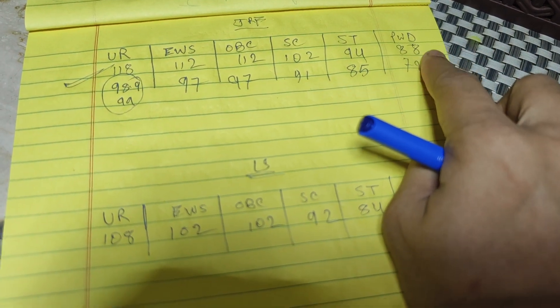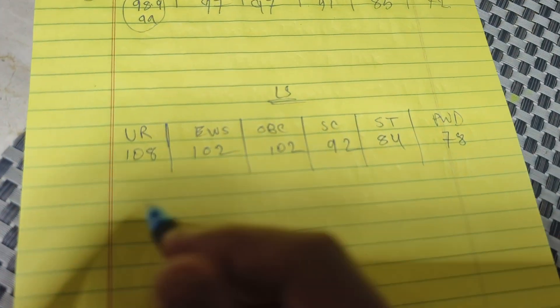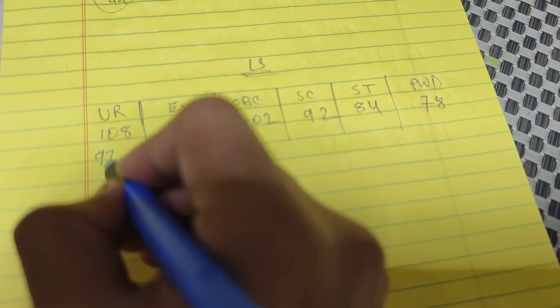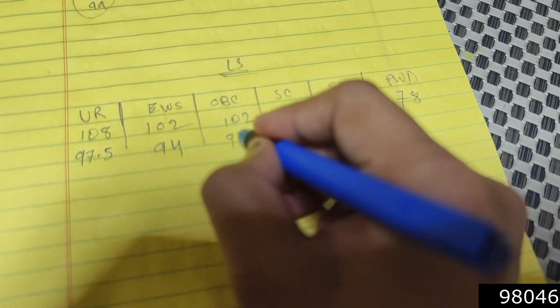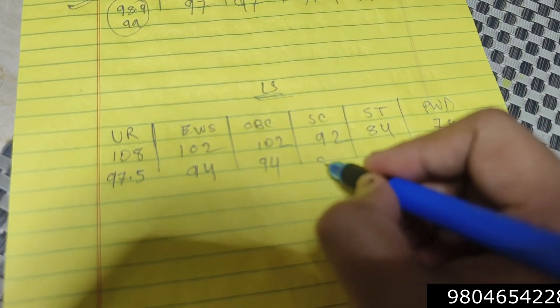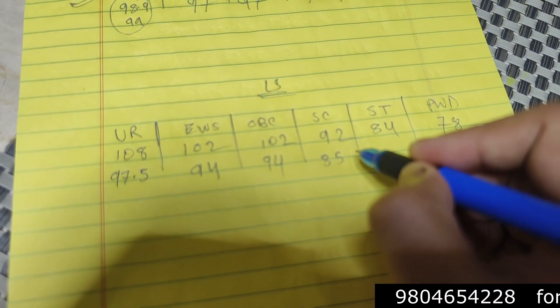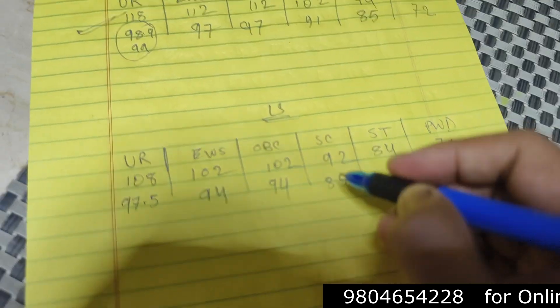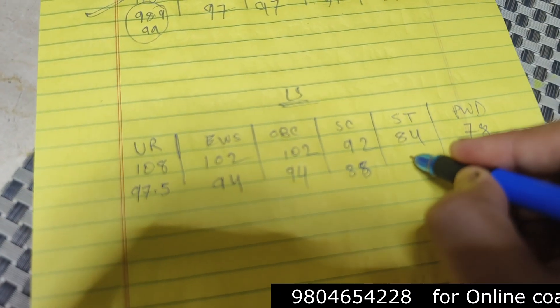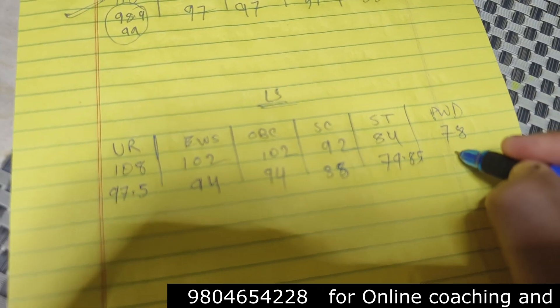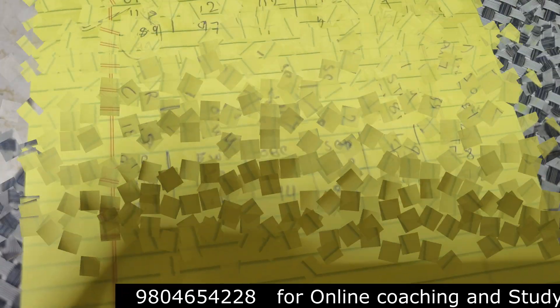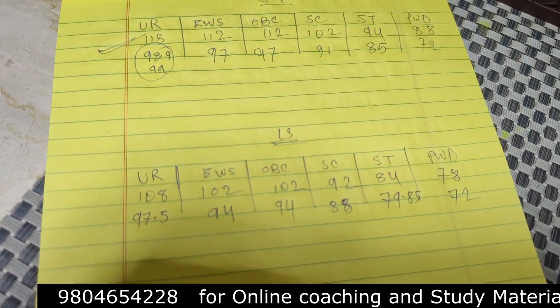Next come to the LS category and for the percentile of unreserved 97.5, EWS 94 percentile, OBC same 94 percentile, SC 88 percentile, ST 79.85 percentile and for PWD let's say 72 percentile. So this is approximate idea of percentile.